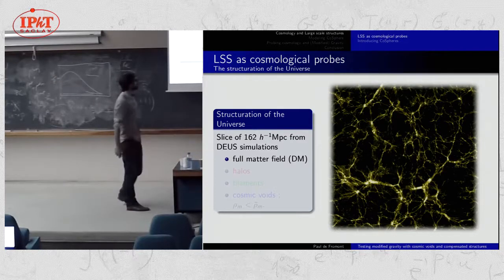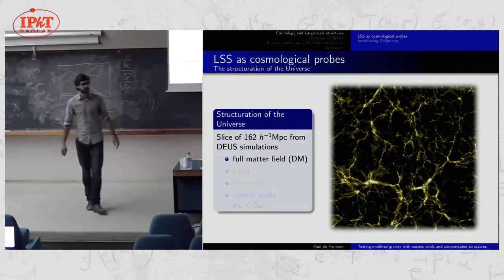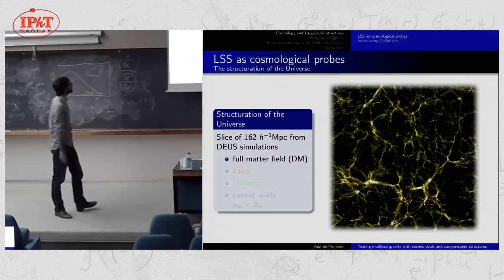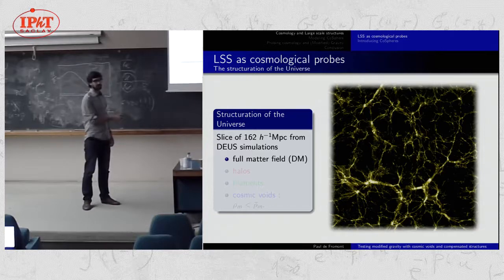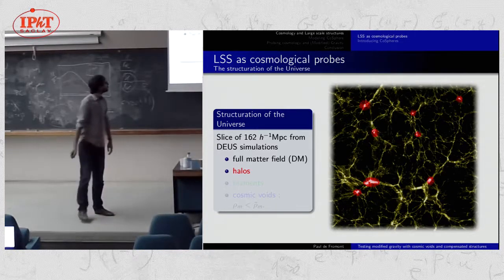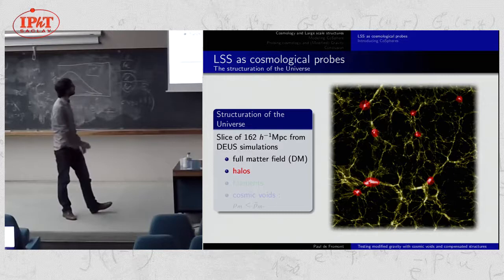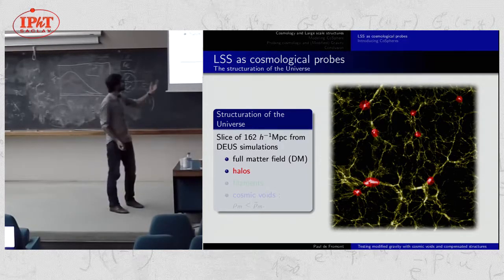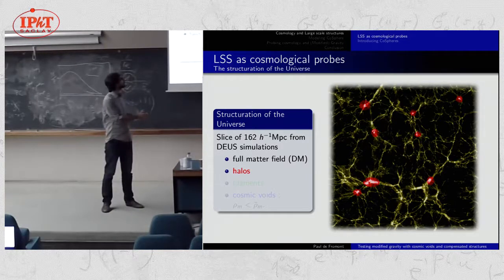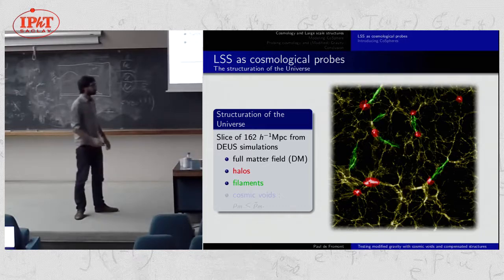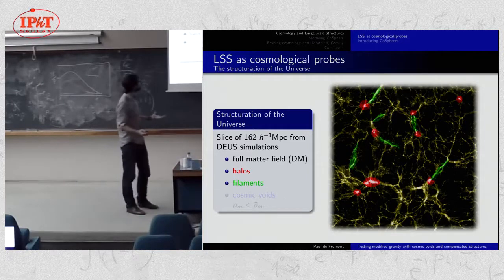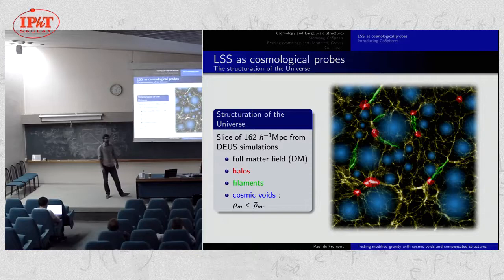This is a well-known sketch of the structuration of the universe on very large scales — a slice of 162 megaparsecs in a numerical simulation, showing only the dark matter field, no galaxies. In this cosmic web, you have very massive regions called halos, filaments connecting these halos, but the very large volume of the universe is composed by cosmic voids, where the local density is less than the average density.